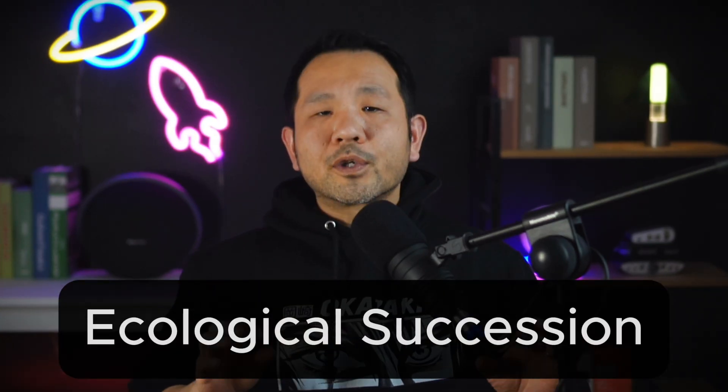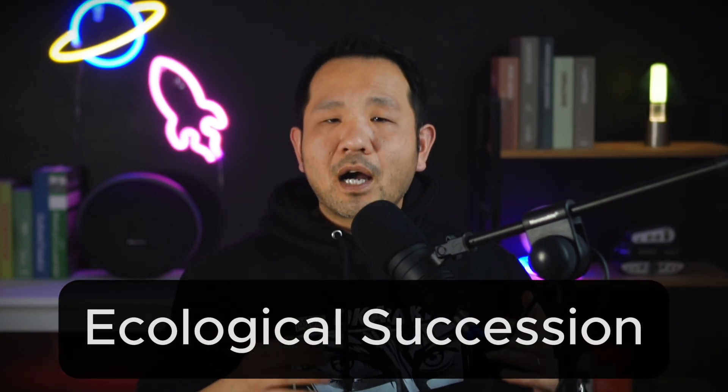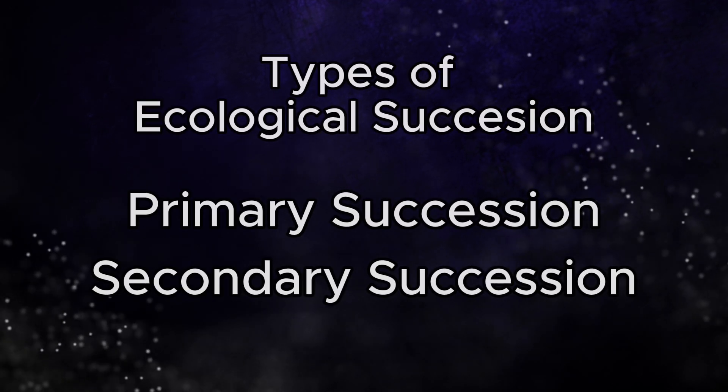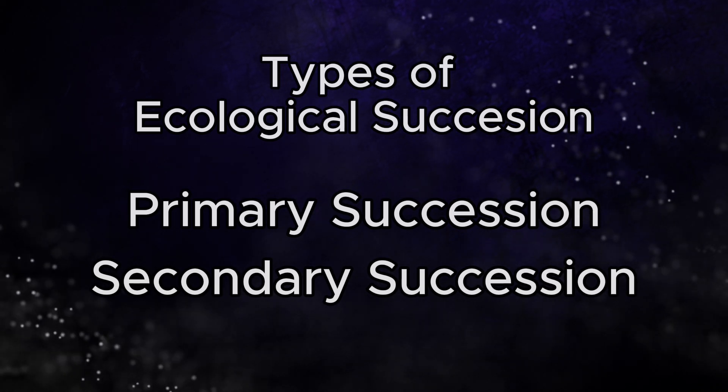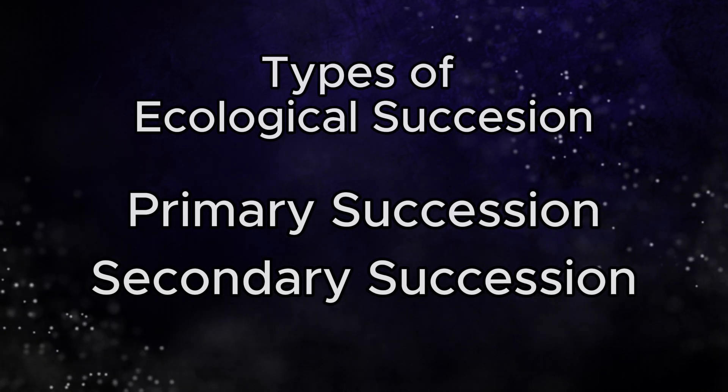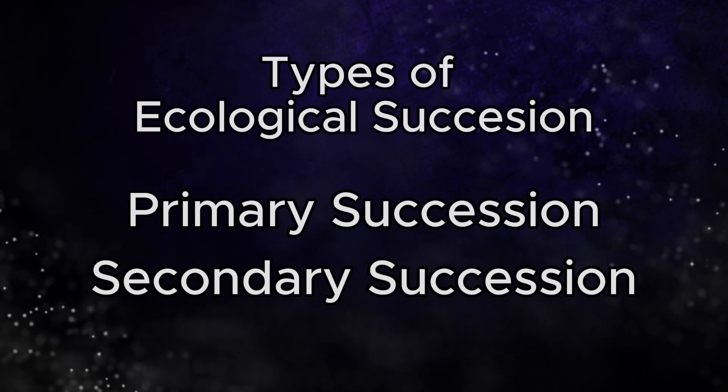That covers disturbance over a relatively short period of time, but what about across longer timeframes? Let's take a look at our final topic: ecological succession. Here we're talking about the recovery of a relatively climaxed community from a large-scale disturbance. Both primary succession and secondary succession share a lot in common, except the point from which they begin.